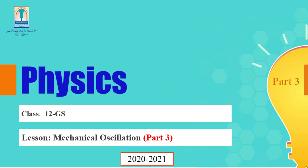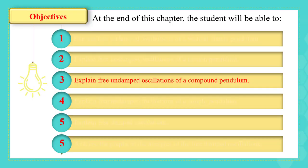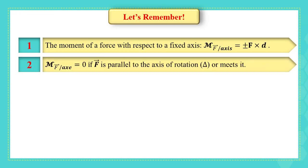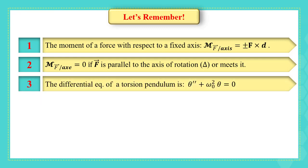This is the third video of mechanical oscillation part two. At the end of this video you're going to be able to explain the free undamped oscillations of a compound pendulum. First, let's remember the moment of a force with respect to a fixed axis: it is given by plus or minus F·d. The moment of a force is zero if the force is parallel to the axis of rotation or intersects it. The differential equation of simple harmonic motion is given by θ'' + ω₀²θ = 0.